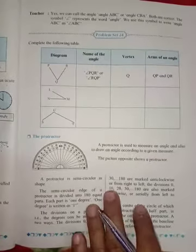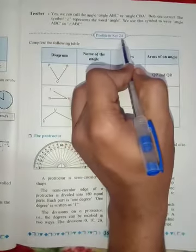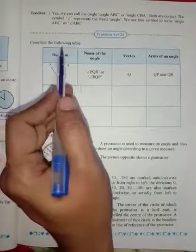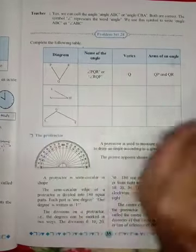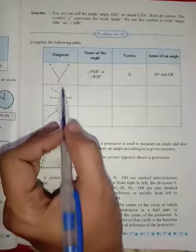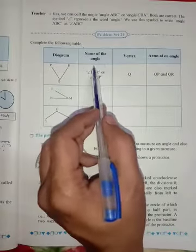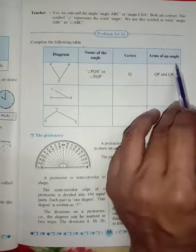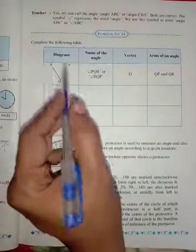Students, in this video we are going to solve Problem Set 24. Complete the following table. Look at here - the diagrams are given here: name of the angle, vertex, and arms of an angle. So look at the diagram.